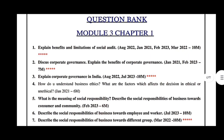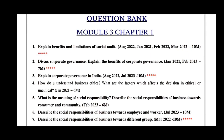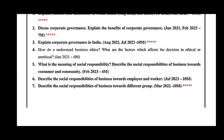Module 3, Chapter 1: Explain benefits and limitations of social audit — 10 marks, August 2023, January 2021, February 2023 — very important. Discuss and explain the benefits of corporate governance — January 2021, February 2023, 7 marks. Explain corporate governance in India — August 2023, 10 marks — very important. How do you understand business ethics and what factors affect ethical or non-ethical decisions — January 2021, 6 marks. Describe the social responsibility of business towards consumers and community — July 2020, 6 marks. Describe the social responsibility of business towards employees and workers — July 2020, 10 marks. Describe the social responsibility of business towards different groups — March 2022, 10 marks.